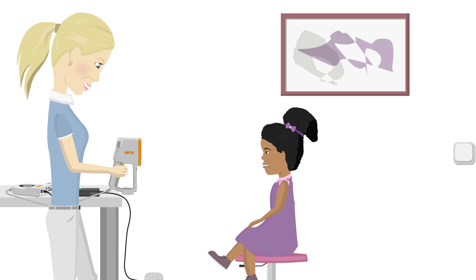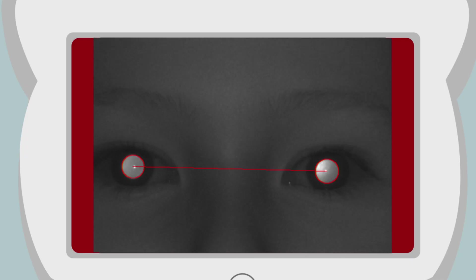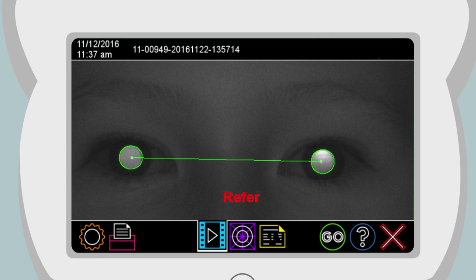Once Anna sees that each pupil is surrounded by a green circle, she needs to pause for just a moment. When this happens, another attention-grabbing warble sound will be emitted. A ping sound indicates the end of the measurement.